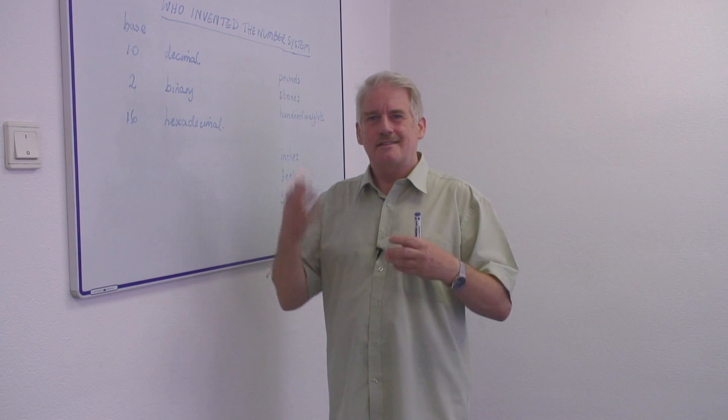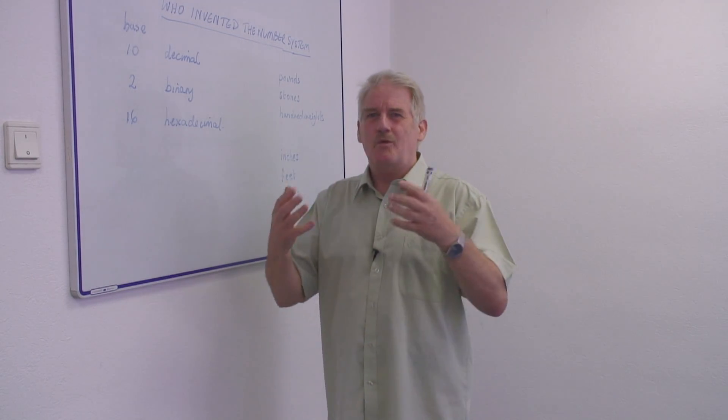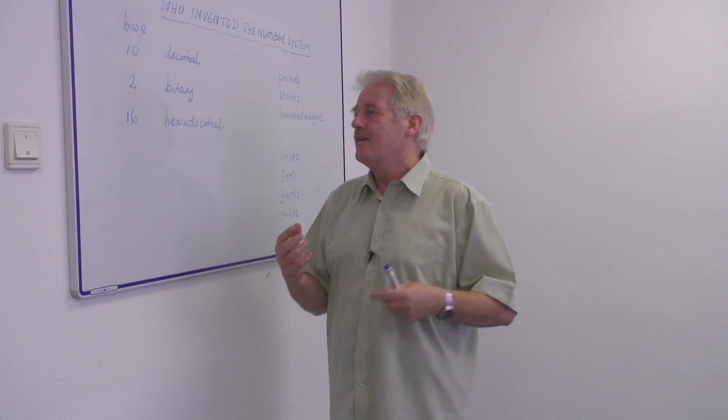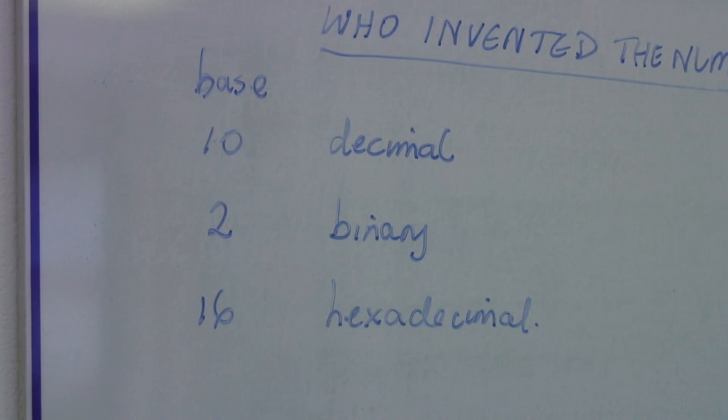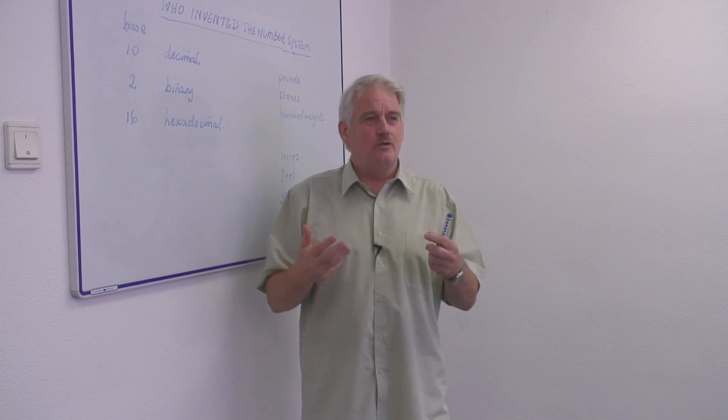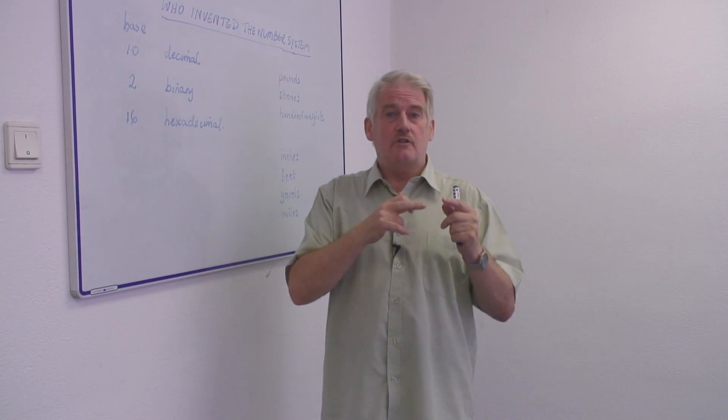They like systems like decimal systems with numbers like one, two, three, four, five. So we have a compromise: we have a hexadecimal system. And this gives us numbers which include the digits zero to nine.